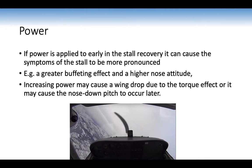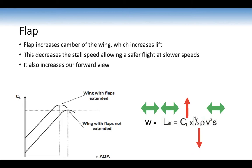With the power-on stall you'll see the aeroplane remains in the stall a lot longer. Increasing power may cause a wing drop due to the torque effect, or it may cause the nose-down pitch to occur later. The propeller spins clockwise to the right and the aeroplane wants to spin towards the left, which can cause a wing drop — so you have to monitor the situation and maintain your reference point using rudder. Flaps increase the camber of the wing, which increases lift — we can decrease airspeed on the same lift, which decreases the stall speed, allowing safer flight at slower speeds.